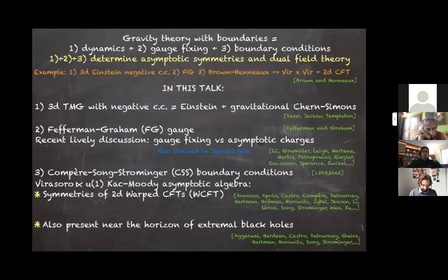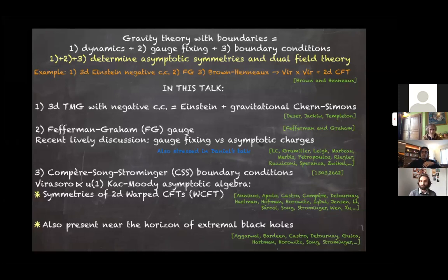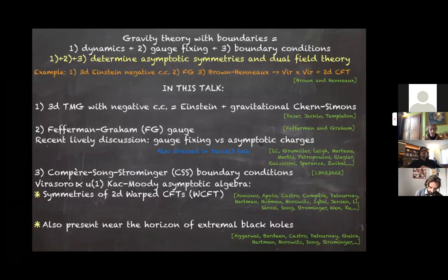I will use Pfefferman-Graham gauge in the bulk. There is a recent lively discussion whether gauge fixing a priori some partial metric components is harmful or not with respect to asymptotic charges, and there is some work in progress with my collaborators on this. The boundary conditions I will use and explain in detail are the so-called Compère-Song-Strominger boundary conditions — CSS for short — and with these boundary conditions the asymptotic algebra is a semi-direct product of Virasoro with a U(1) Kac-Moody algebra.